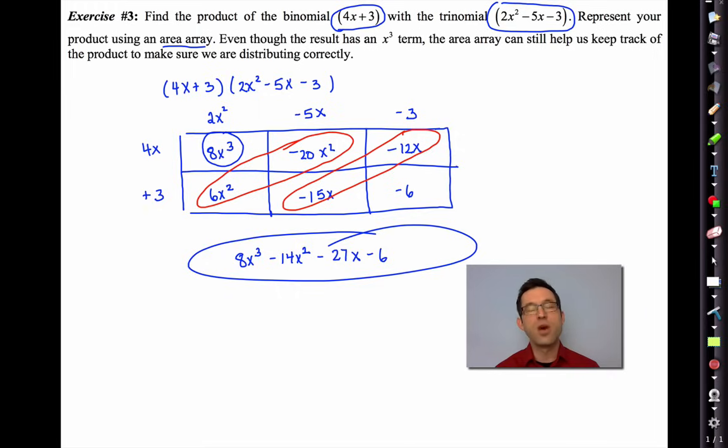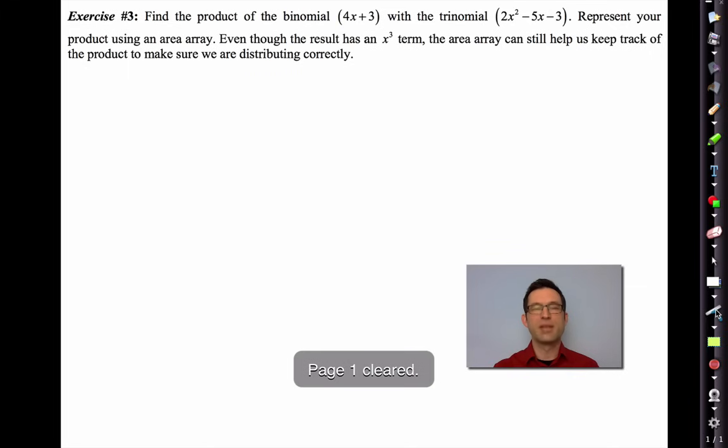Now it's really just combining like terms. Well, 8x³ is 8x³. Nothing that we can combine with that. And notice now how these two terms and these two terms are like terms. So 6x² minus 20x² would be -14x². -15x, -12x, be careful, would be -27x. And then nothing combines with the -6. So there's our product. Now there's absolutely no reason why you have to draw that picture. You could just distribute the 4x, distribute it through. Then take the +3 and distribute it through. And I'll do that sometimes as well. But the area array helps us keep track of all the various products going on.